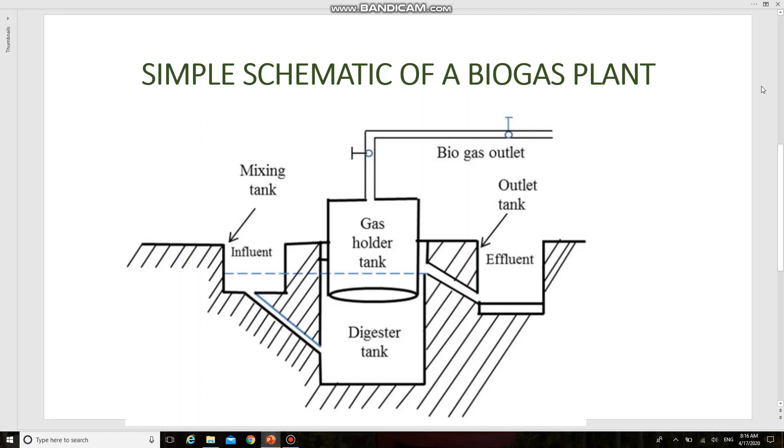Students, in this video we are going to see biogas as an alternative fuel for IC engines. Biogas is produced by extracting chemical energy from organic materials in a sealed container called a digester. This is the digester tank.